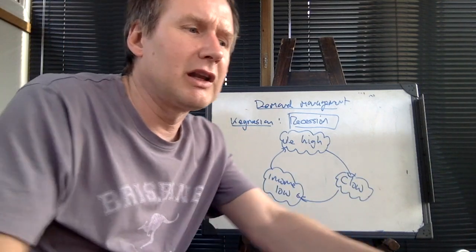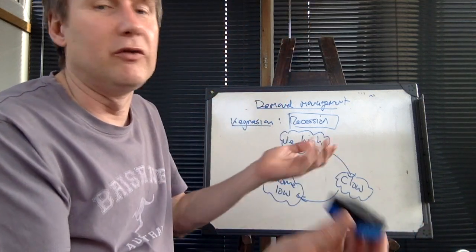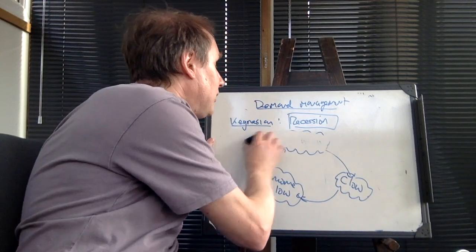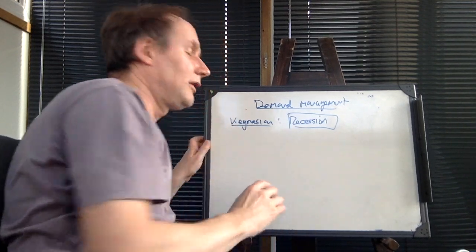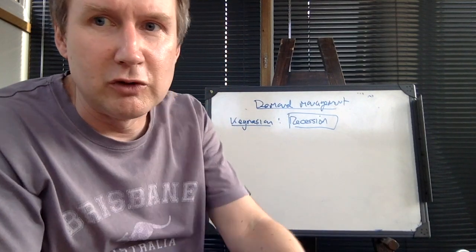And what Keynesians say is, look, we can get stuck like this. And this is something that we'll move on to look at in a lot more detail next term. But we get stuck in that situation. The economy isn't going to sort itself out. And therefore, the government should do something.